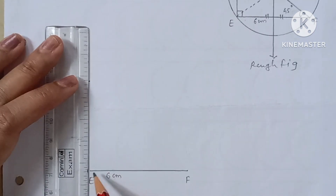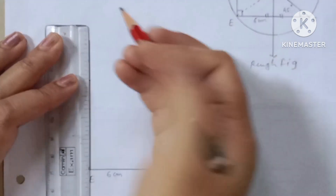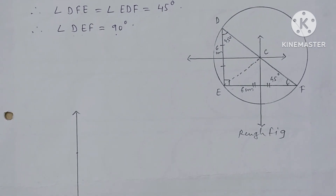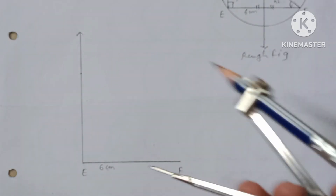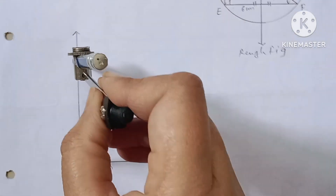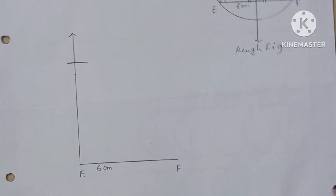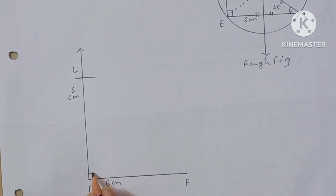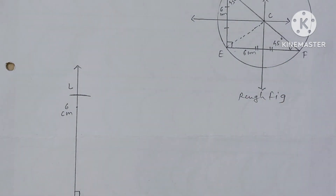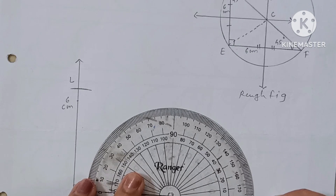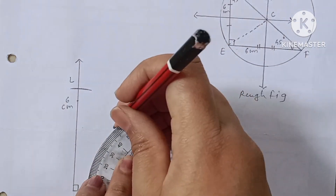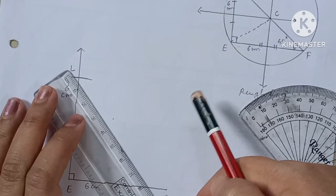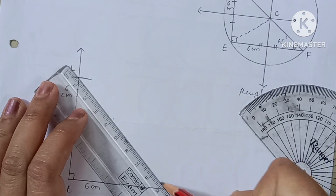Draw the line at 90 degrees to EF. Now take the 6 centimeter distance in your compass. Keep the compass point on E and make an arc — this gives you point D. Now angle F is 45 degrees, so mark the 45 degree angle at F and draw the line. Join point D and F.